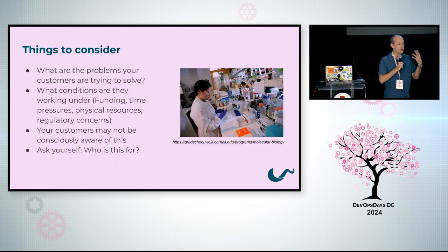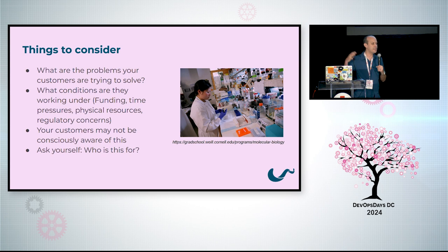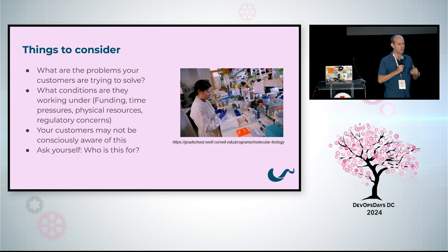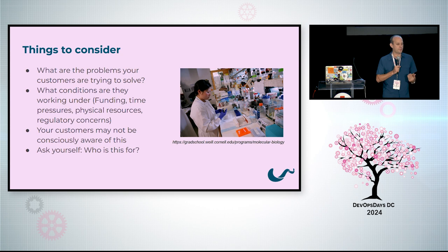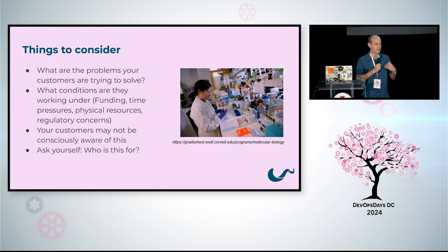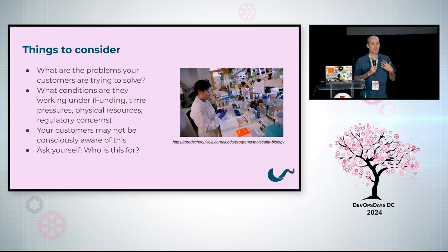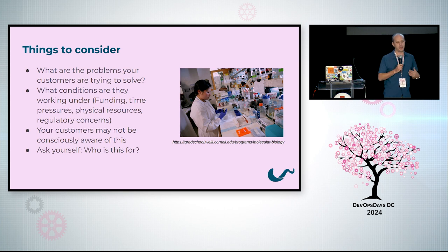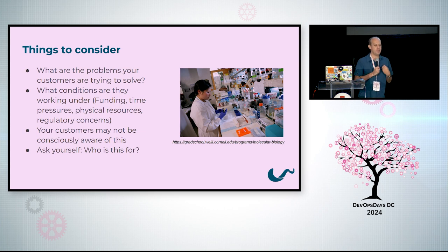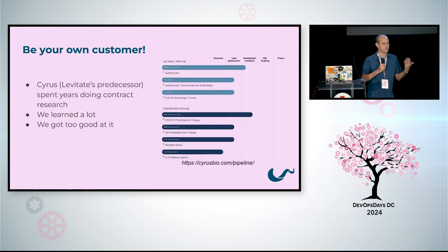Some things you need to think about: what are the problems your customers are actually trying to solve, and what conditions are they working under — in terms of their funding, their time pressures, their physical resources, their regulatory concerns? Your customers probably aren't working in the same conditions that you are. And if they've been doing that work for a really long time, they might not really be aware of the constraints they're dealing with — constraints that can differ from what you're thinking about as a software engineer or an operations person. So you've got to have a good idea of: who is this product actually for? Because unless you're making a Kubernetes tool and you are a Kubernetes person, it's not for you — it's for someone else.